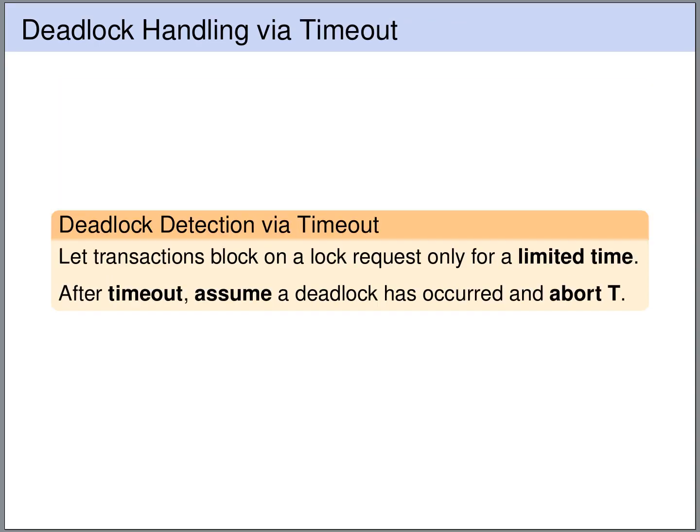A simpler strategy for deadlock detection is via timeouts. We simply define a maximum amount of time that a lock request is allowed to be blocked. After this maximum amount of time, we assume that a deadlock has occurred and we abort the transaction. Clearly there are dangers with this approach — we have to choose the timeout very carefully, and still there is a risk that we abort transactions that are actually not deadlocked.